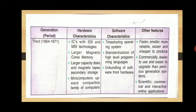The software characteristics of the third generation include: first, time-sharing operating system; second, standardization of high-level programming languages; and third, unbundling of software from hardware. Its features include: faster, smaller, and more reliable; easier and cheaper to produce; commercially easier to use and upgrade than previous generation systems; and scientific, commercial, and interactive online applications.